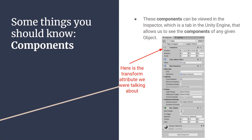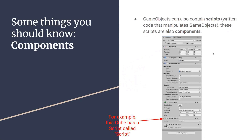Components can be viewed in the inspector, which is a tab in the Unity Editor that allows us to see the components of any given object. As we talked about, the transform attribute shows position, rotation, and scale. We can also put scripts on game objects. These scripts are written code that manipulate game objects and create game logic. They are also components.